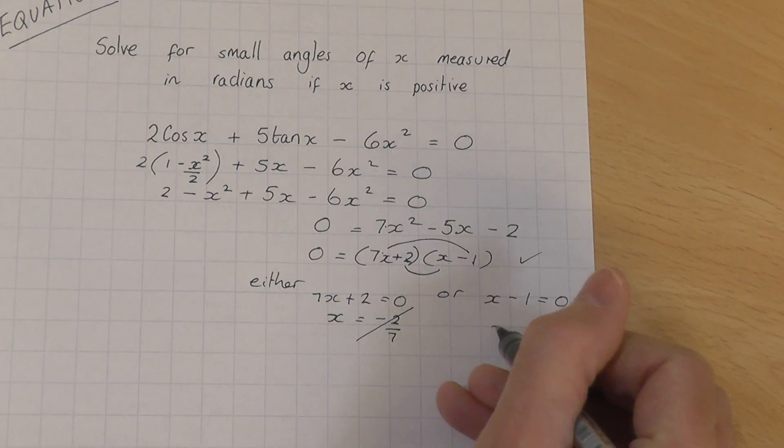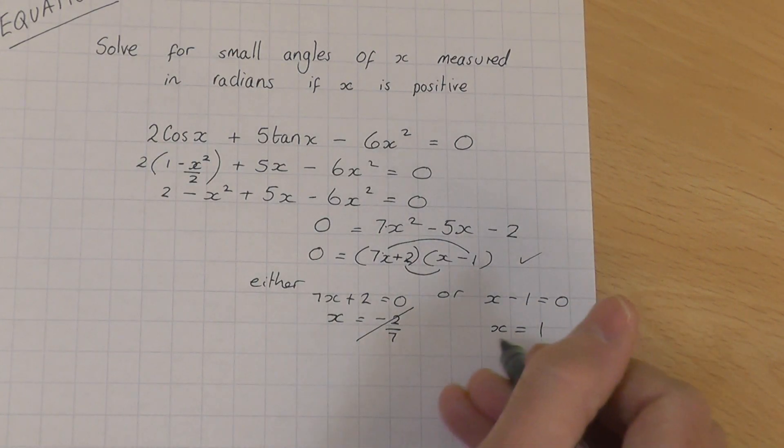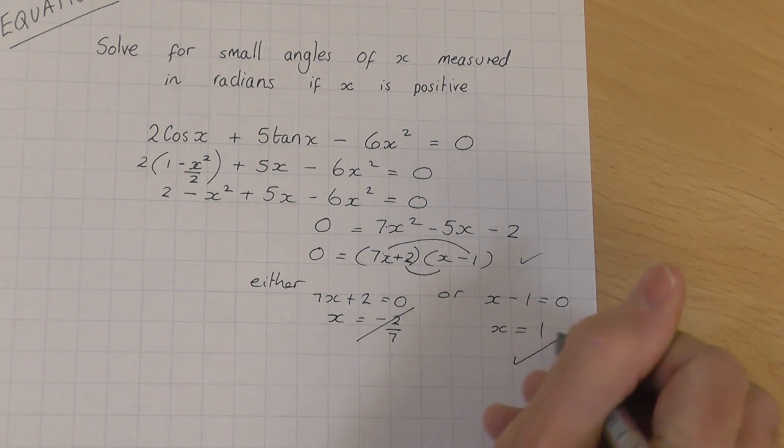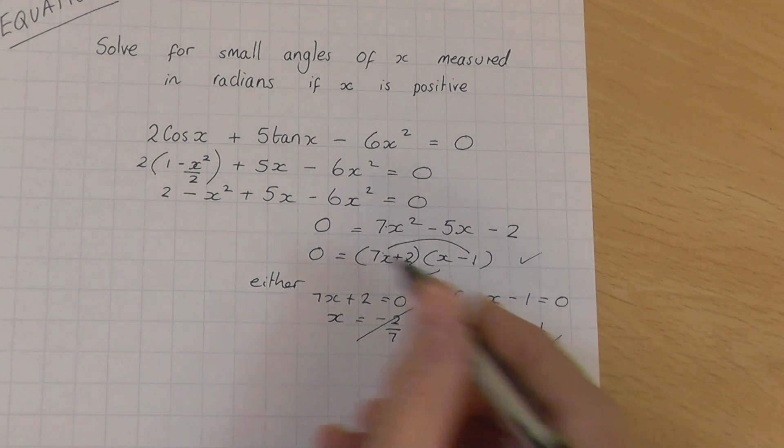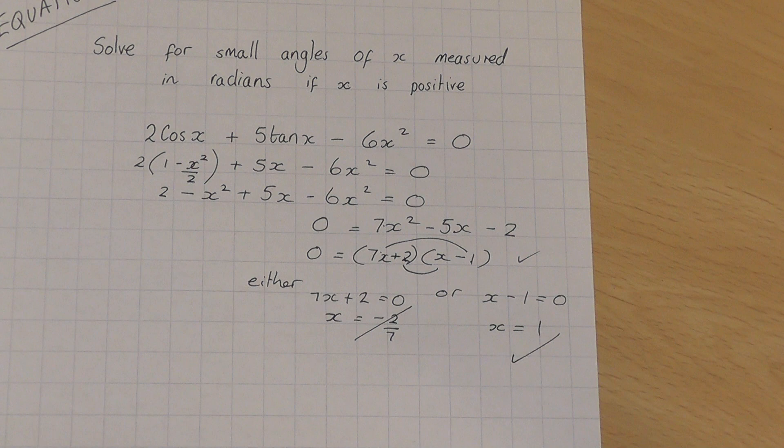And then this one here, x will be equal to 1, and x equals 1 is positive, so that's the answer we want. So there you go. If x is measured in radians, because x is small, x must have the value 1. Thank you.